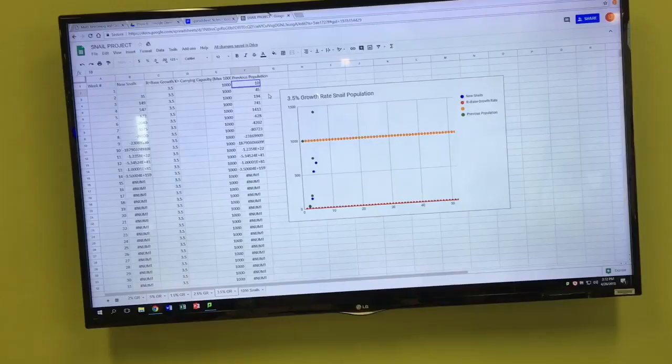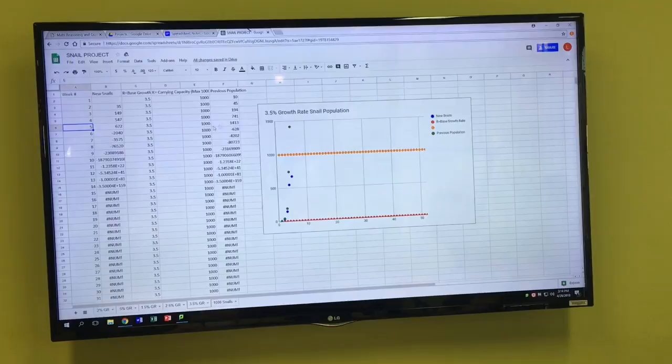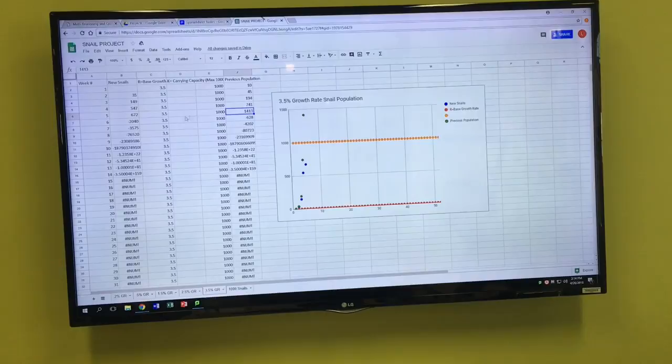Alright, for our 350% growth rate, we found that in week 5 we reached our carrying capacity. It may have been a little bit earlier because it's a little bit over 1,000, but you can see an extremely sharp sigmoidal curve, and that is all for that one.